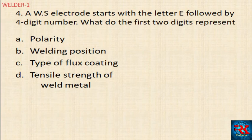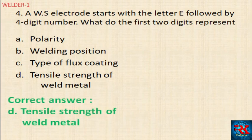The AWS electrode starts with the letter E followed by a four-digit number. What do the first two digits represent? The correct answer is the tensile strength of the weld metal.